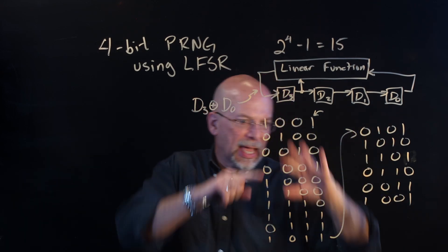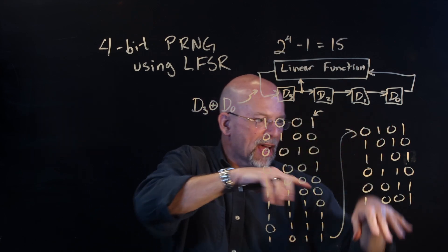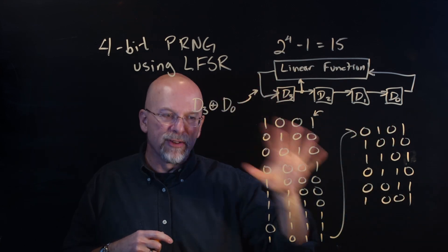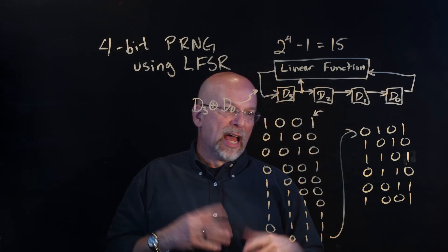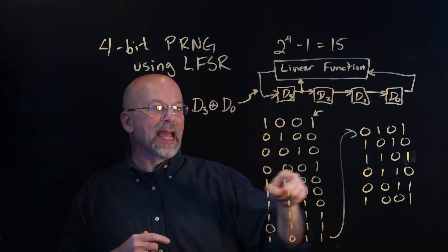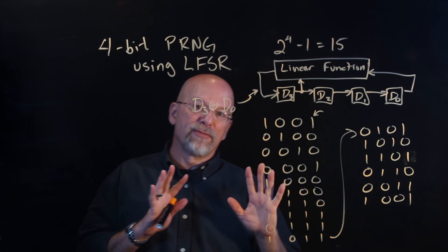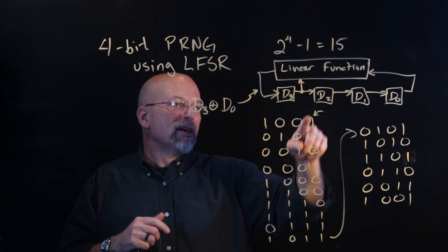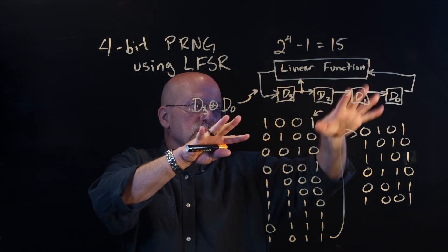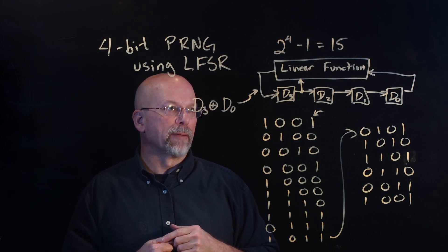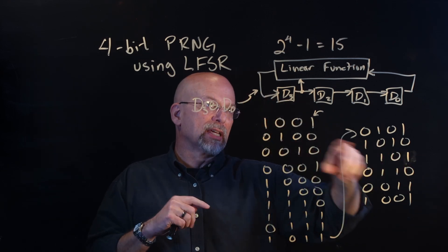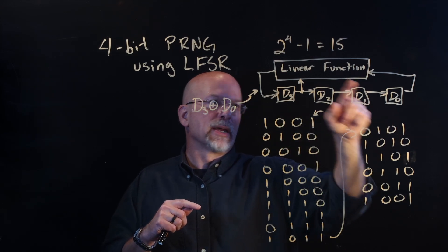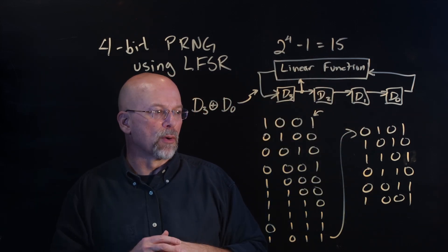Nothing gets duplicated. These are different, distinct values, all the way through the 15 possible values for this shift register. What we've done is created a sequence of 15 bits that allow us to use just this simple piece of hardware. Instead of having to store all of those values, all we have is the 4 bits and the simple exclusive OR function.